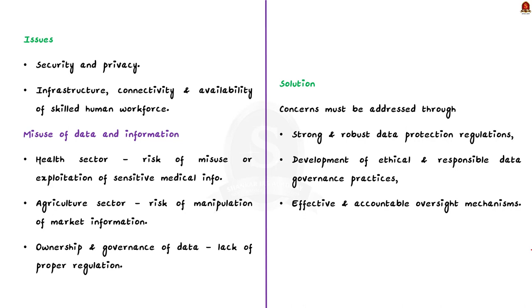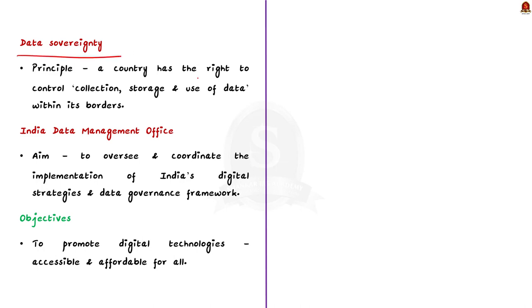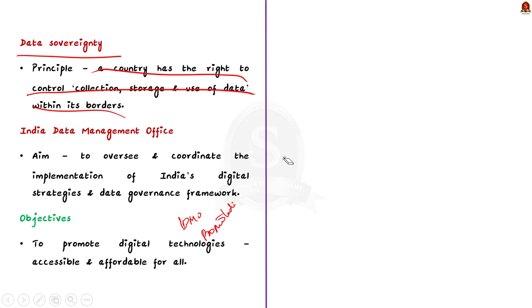When we talk about data protection, we must consider data sovereignty — the principle that a country has the right to control the collection, storage and use of data within its boundaries. To exercise this right, the Indian government has proposed setting up an India Data Management Office, IDMO. The IDMO is expected to oversee and coordinate the implementation of India's digital strategies and data governance framework, promoting digital technologies that are accessible and affordable for all. IDMO will also work to promote open source solutions to ensure underlying data architectures serve as a social public good, acting as alternatives to proprietary data solutions governed by big tech companies.